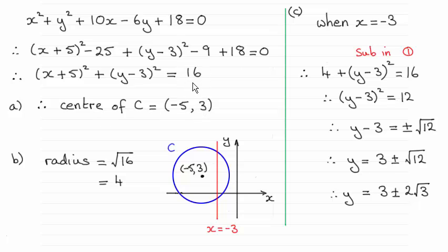Remember this term on the end this constant gives us r squared. So you need to square root it to give us the radius which is 4. Now I've sketched the circle just so I could appreciate what's going on.